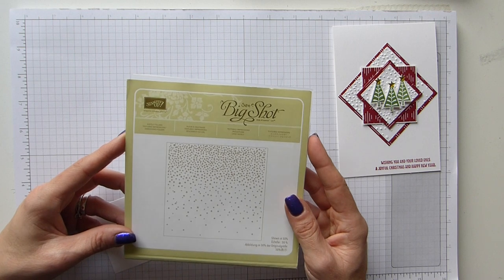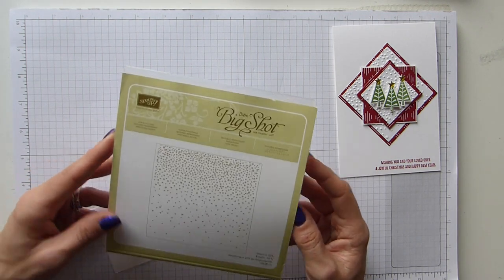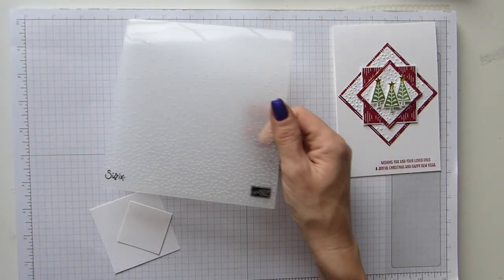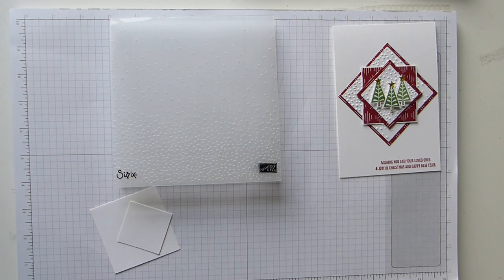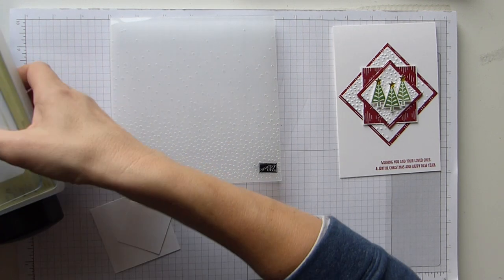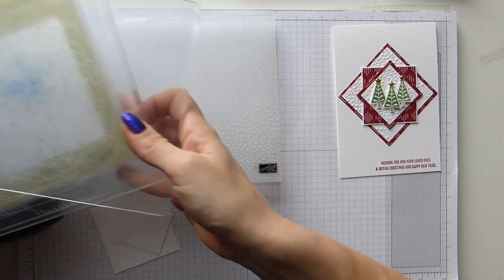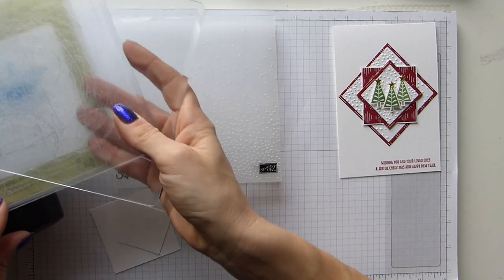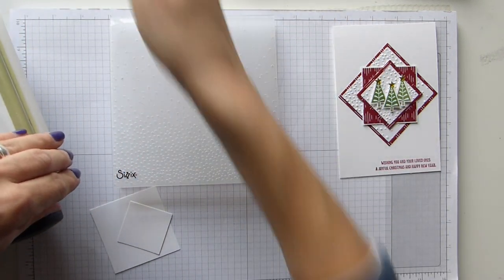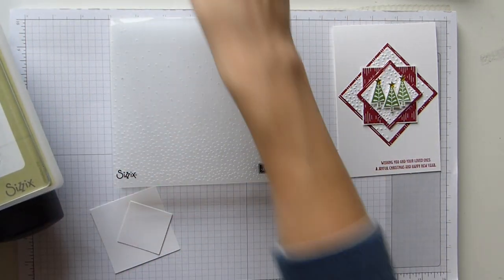And I'm using the lovely Softly Falling textured impressions embossing folder which I love. And I'm going to grab my big shot because I've got a feeling I need to change my plate. Oh no, no, we're all good. It's all ready. So it is just the normal big shot platform that you need.